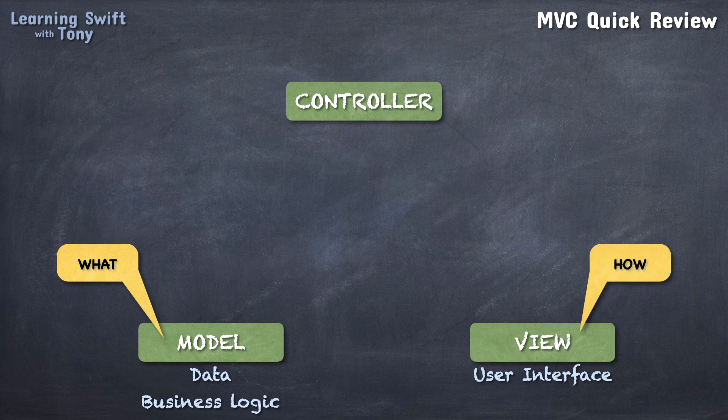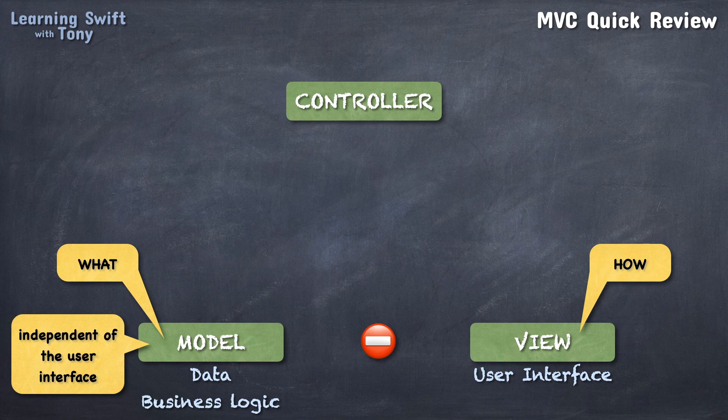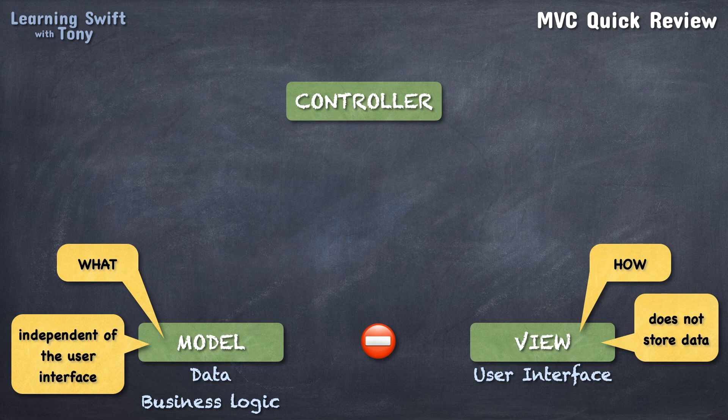There should never be any direct communication between the model and the view. The model is completely independent of user interface and will have no idea how the data will be represented on the screen. The view, on the other hand, will not store or manipulate any sort of data. The information shown on the screen is only a visual formatted representation of the data.